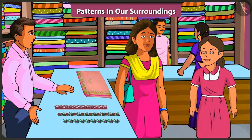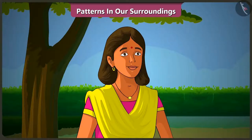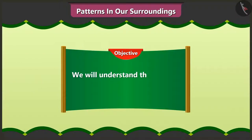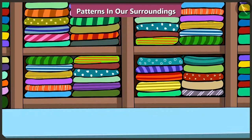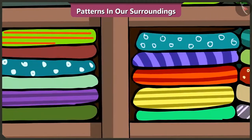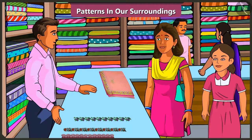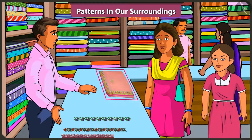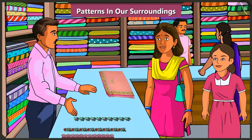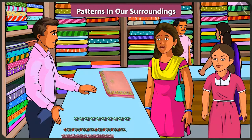Rightly said, Vinny. Mummy, I want to know more about patterns. Okay, Vinny. So today let's observe the patterns we see in our surroundings. Look, Vinny, all the clothes here have some pattern on them. Oh yes, in all these clothes, some shapes or designs have been repeated again and again. Rightly said, Vinny. Brother, we like this patterned lace. Please use this one on my saree. Okay, you can collect your saree tomorrow. Thank you, brother.